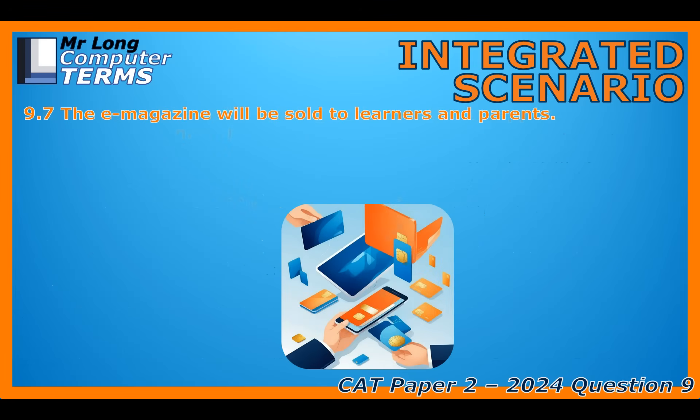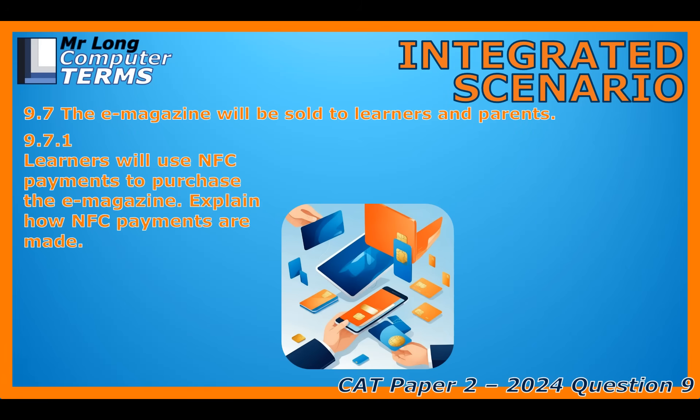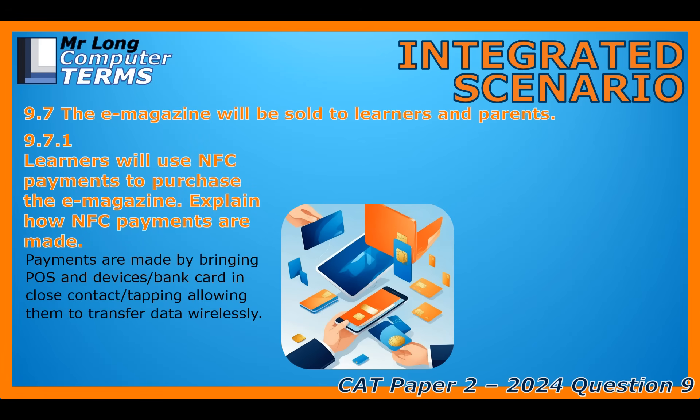Now comes the final piece: monetization. Say they sell the e-magazine at a physical point-of-sale terminal in the school corridor and plan to use NFC payments. How does the secure transaction actually work when someone taps their card or phone? NFC stands for Near Field Communication — a method of very short-range, high-frequency wireless communication. The payment is initiated by bringing the POS terminal and the learner's device — a smartphone, watch, or bank card — into close contact by tapping or hovering. Crucially, the data transfer is usually a tokenized, encrypted signal representing the payment details without exposing them directly, making the transaction both incredibly fast and secure.